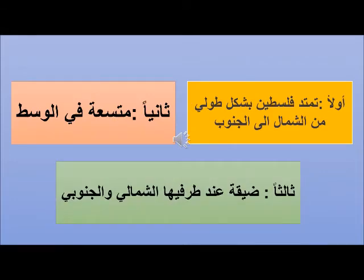بعد أن شاهدنا خريطة فلسطين نستنتج: أولاً، تمتد فلسطين بشكل طولي من الشمال إلى الجنوب. ثانياً، متسعة في الوسط. ثالثاً، ضيقة عند طرفيها الشمال والجنوب.